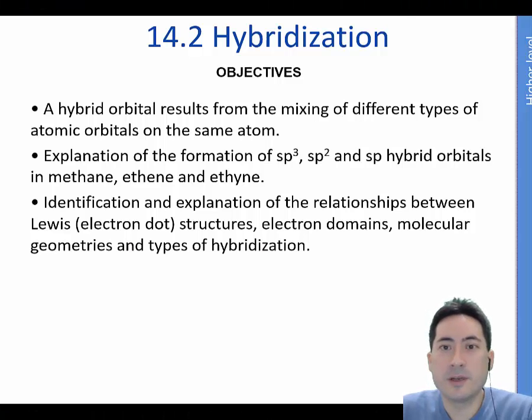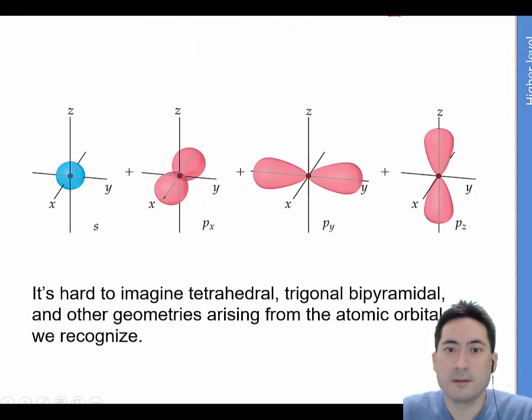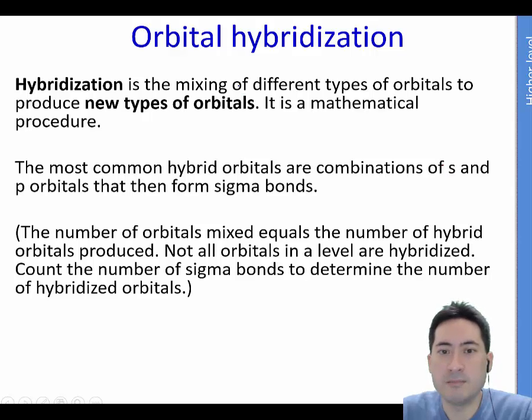Welcome to lesson 14.2 hybridization. These are the objectives. Here we are going to talk about how orbitals mix. You could see from a tetrahedron it would be difficult to get a tetrahedron by using these four orbitals. So what actually happens is they actually mix and combine and that's related to mathematical formula.